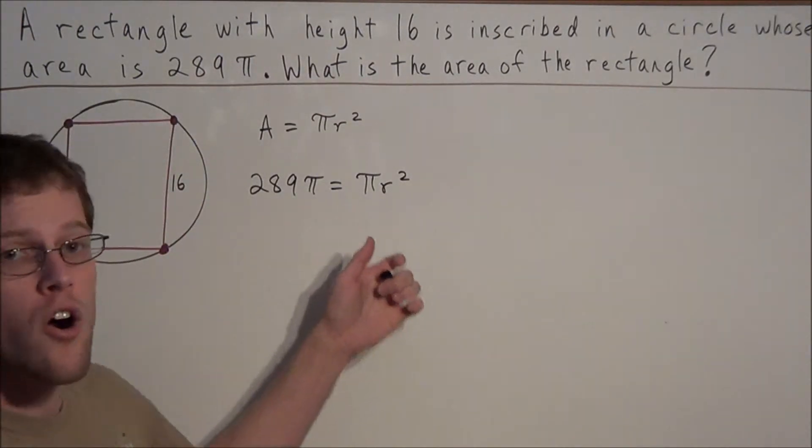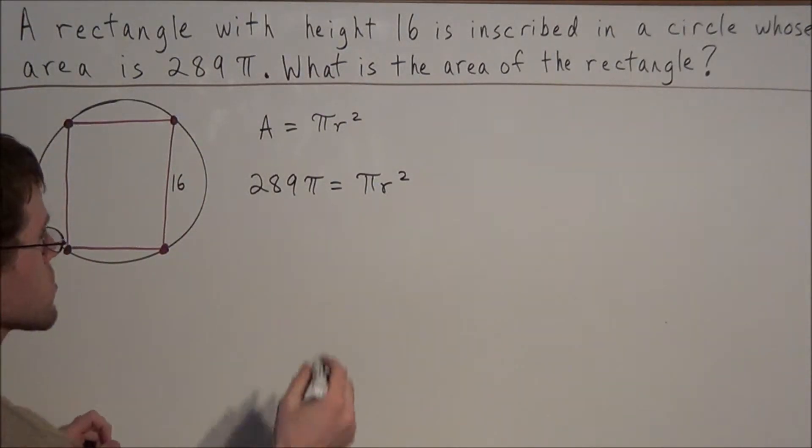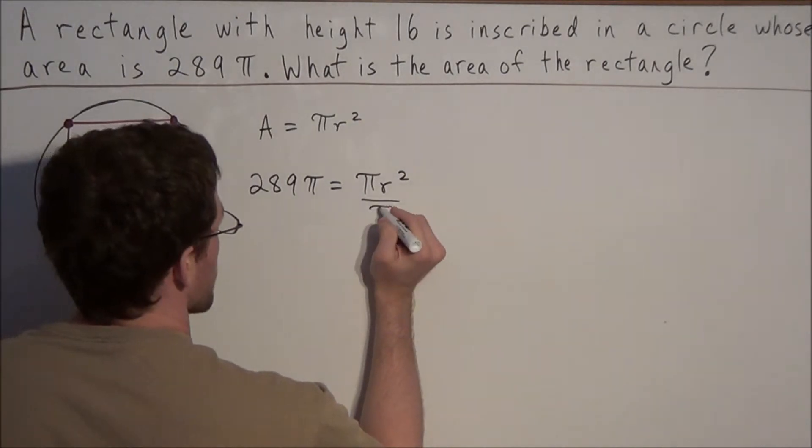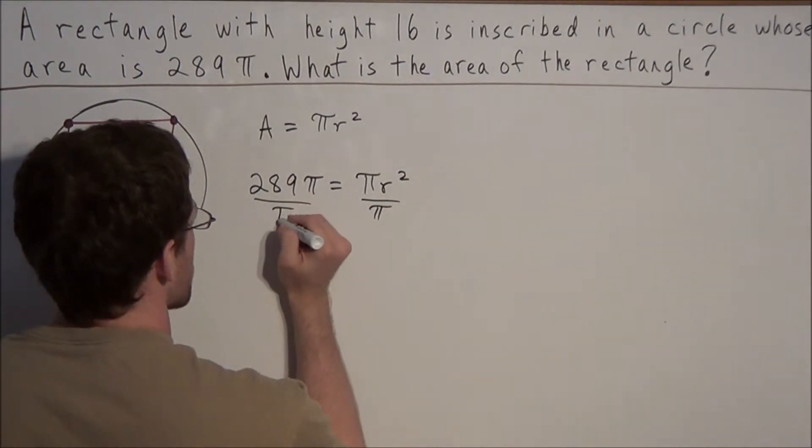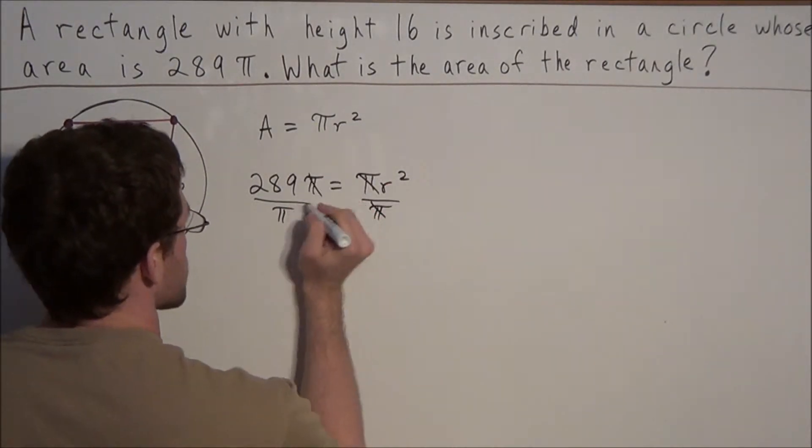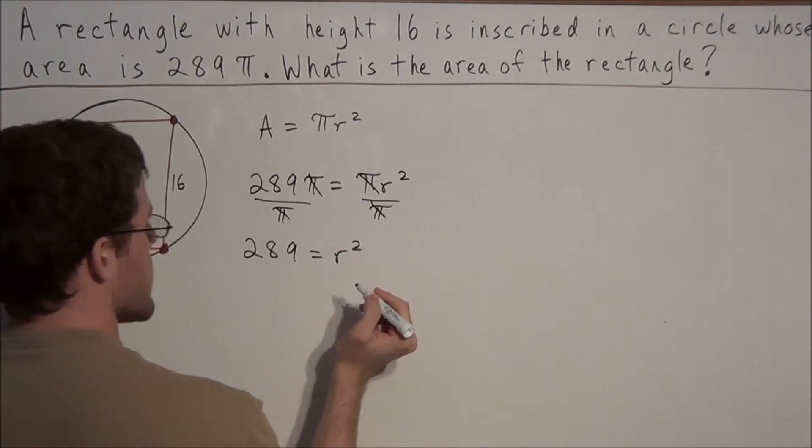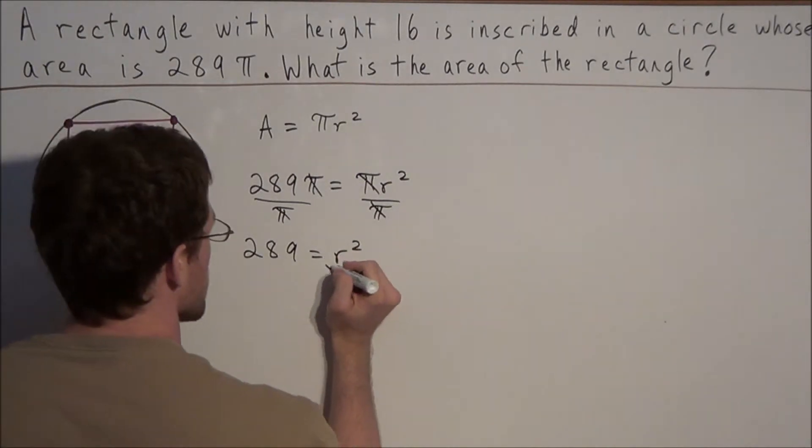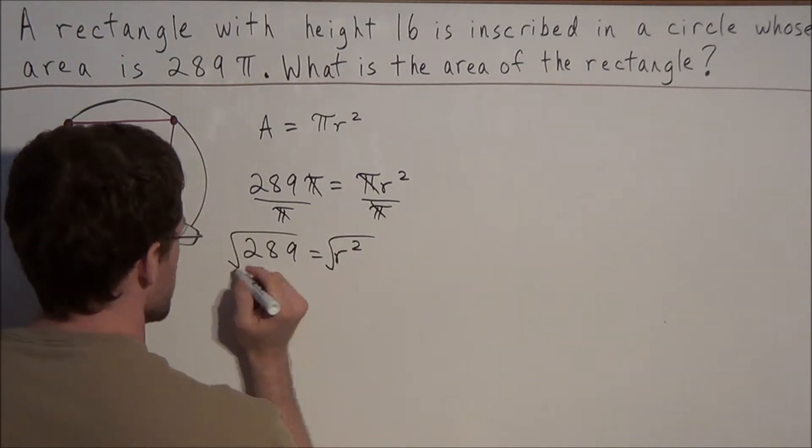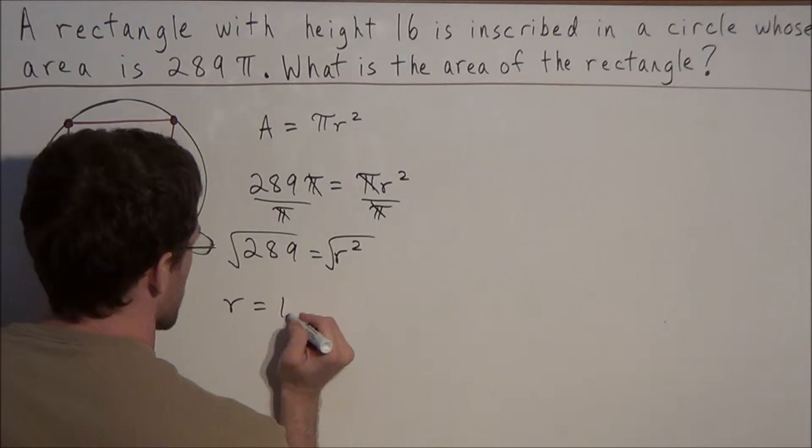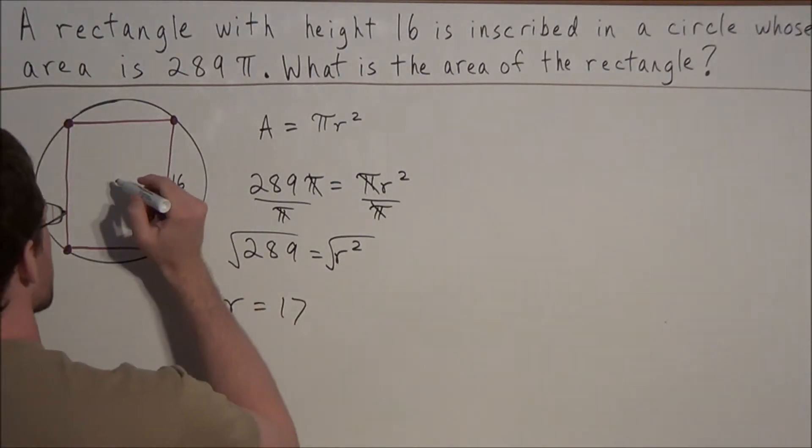So now to solve for r, or to find the radius of this circle, all we need to do is divide both sides by π, and the π's will cancel on both sides, and now we have 289 equals r². So to find the length of the radius, we take the square root of both sides, and we find that the radius is 17.